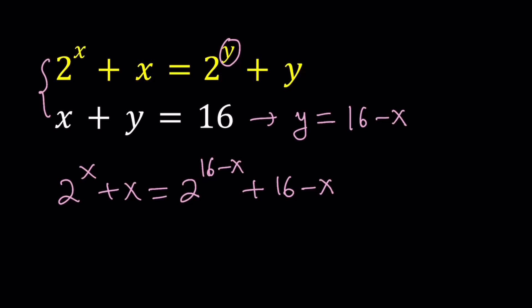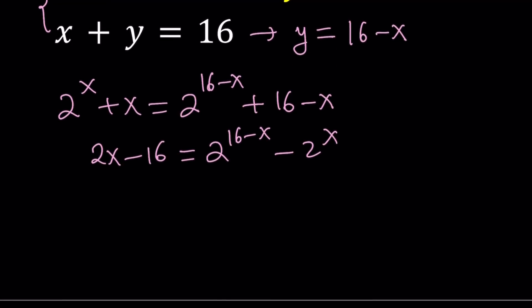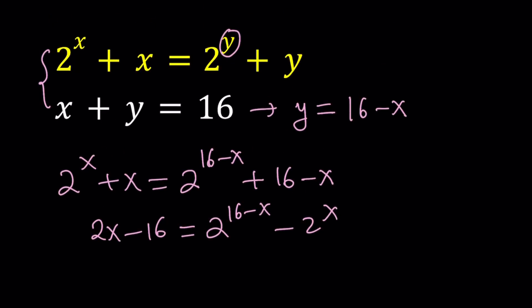It would definitely be nice if x cancelled out and we ended up with an exponential equation, but unfortunately that's not the case. So what can I do with this? I can put everything on the same side. I can put the 2x minus 16 on the left-hand side and then put the exponentials on the right-hand side, but no matter what you do, I don't really see an easy way out instead of guessing the answer. That's not the goal. This is probably not going to work. If you find a way that makes this work, please let me know. But I don't think it's going to work nicely.